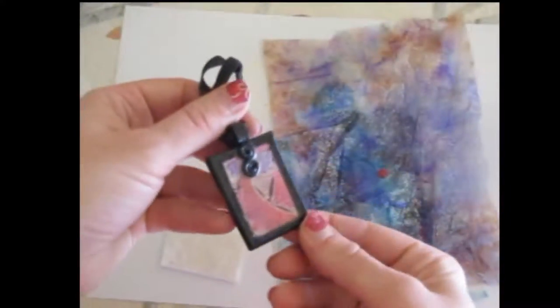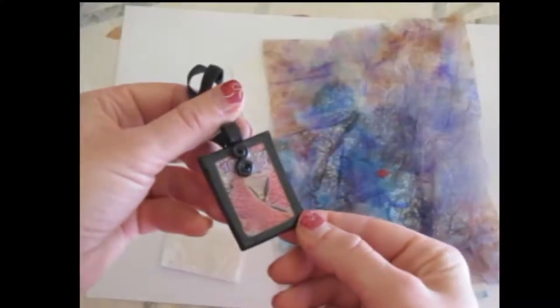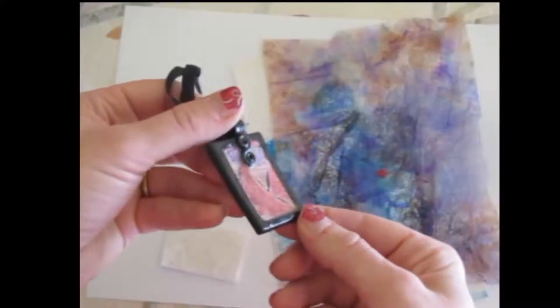Here even is a pendant I made using alcohol inks on foils, metallic foils, and then applying it to polymer clay. You can use alcohol inks right in polymer clay as well.